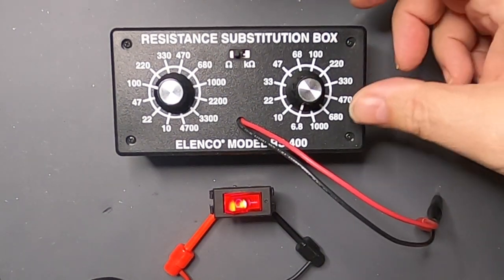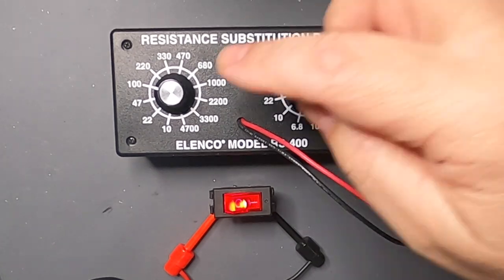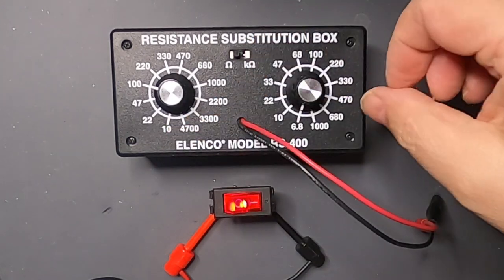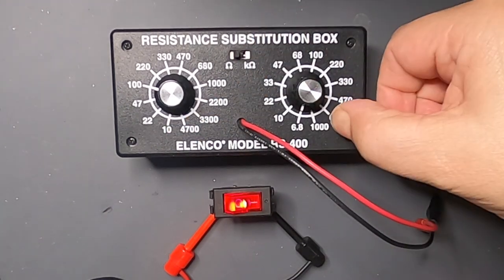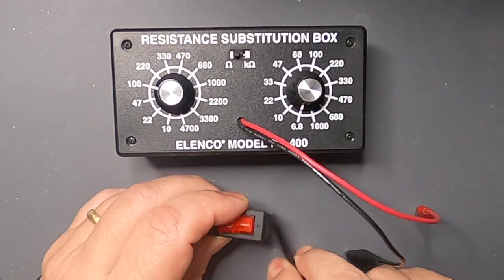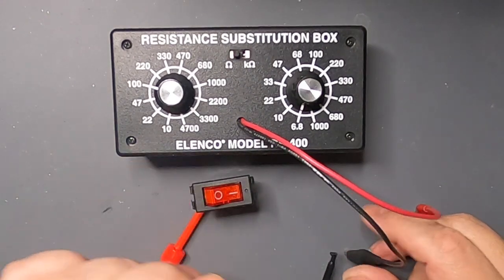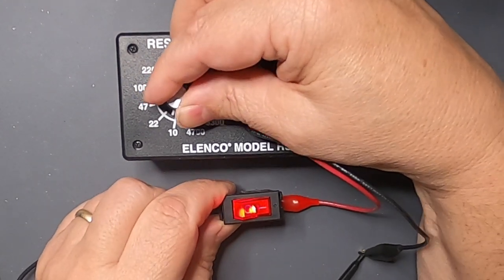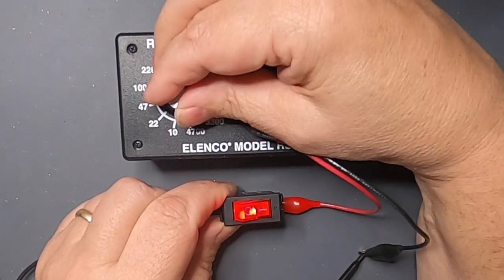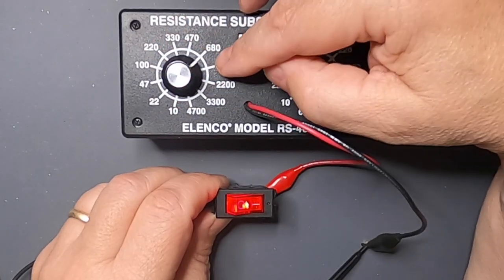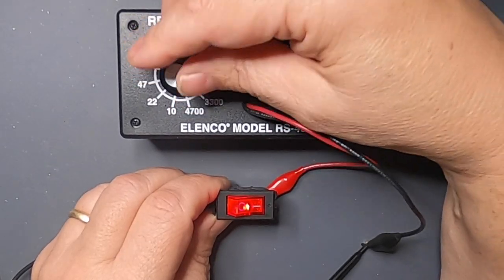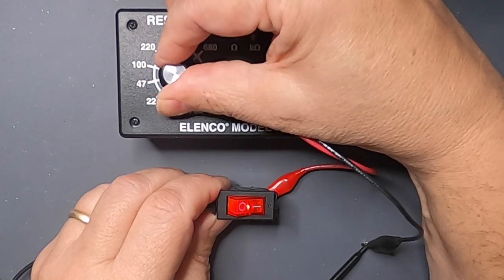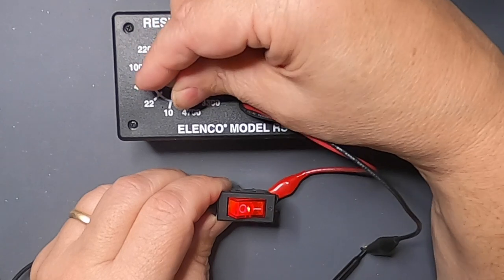And so we're just going to use a resistor substitution box. And if you don't have one of these, this is a really handy thing to have. All this is, is just a bunch of different resistors that I can dial in from 10 ohms all the way up to one mega ohm. And we simply connect the resistor substitution box in series with the negative lead of the LED. 10 ohms makes no difference. As you go up in value, here's 680 ohms. And once we get to 1000, we start to get dim. So I'm going to do maybe 3300 ohm.